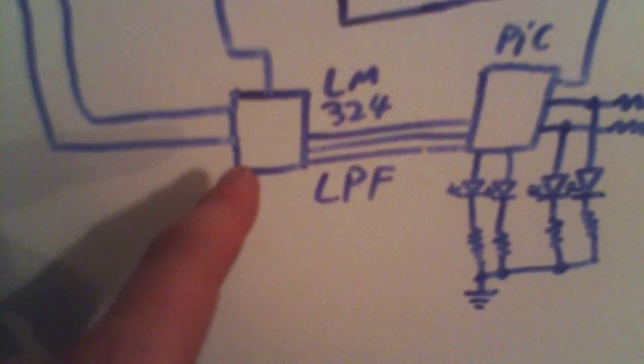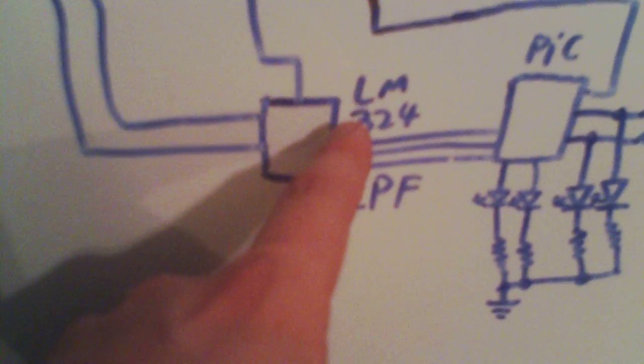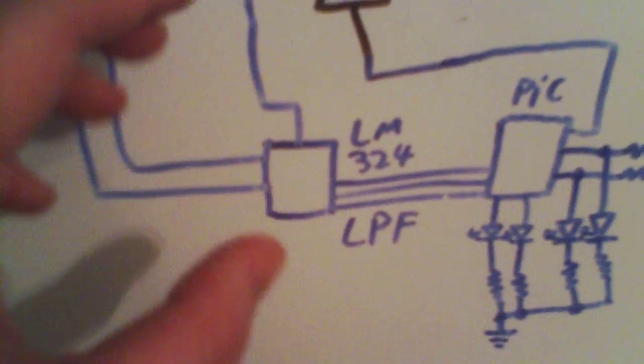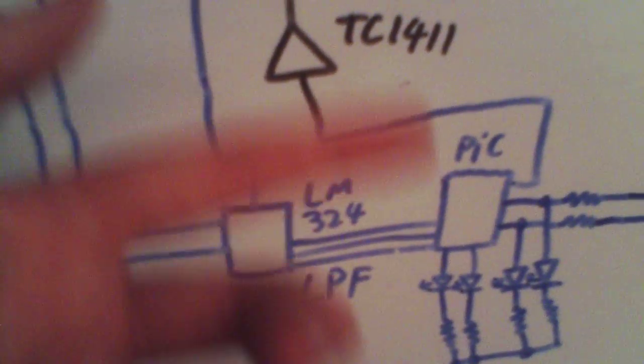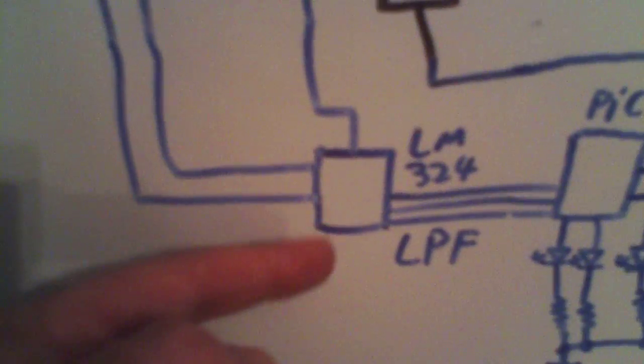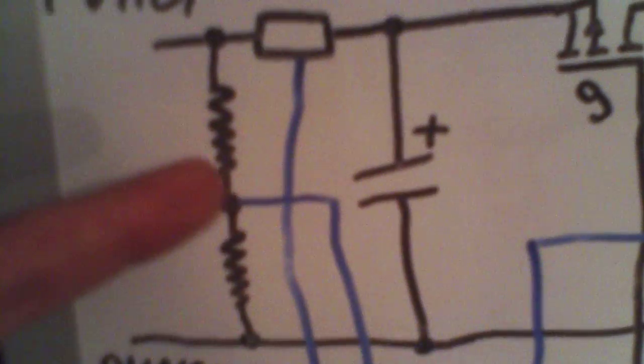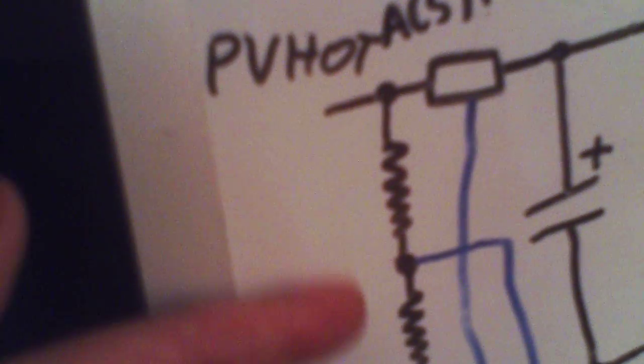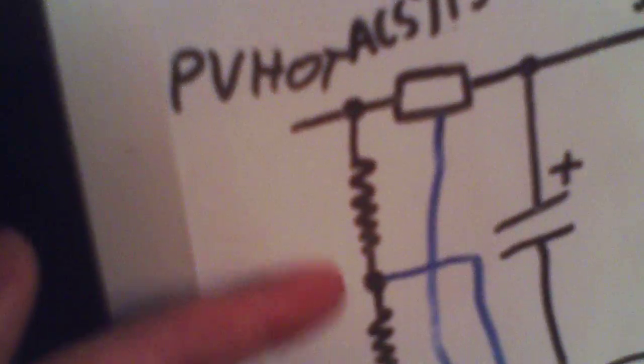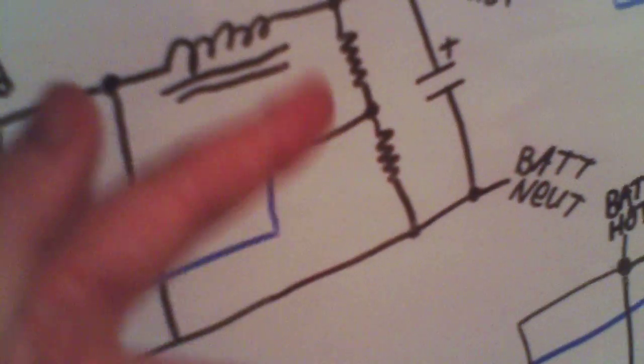Then there's going to be some LM324 based low pass filters to filter out any of the 25,000 cycle per second noise from the buck converter, so that the PIC is only measuring DC. That will also allow me to use bigger or higher resistance values in the potential divider so that there's lower losses.